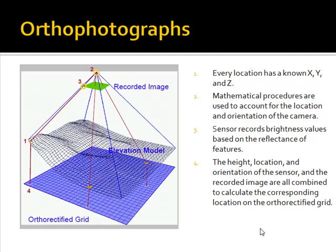If you're using imagery within a GIS, particularly high-resolution aerial imagery, there's a good chance it's an orthophotograph. In orthophotographs, distortion from the sensor and from the surface have been corrected, meaning these photographs can be used to make accurate measurements just like a map. Every location in an orthophotograph has a known X, Y, and Z. Mathematical procedures account for the location and orientation of the camera, combining sensor brightness values, height, location, and orientation to calculate the corresponding location on the orthorectified grid.